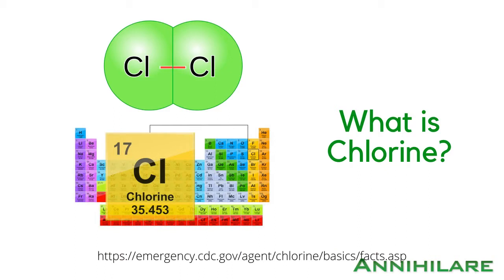Before we start, let's first talk about what chlorine is. According to the CDC, chlorine is a naturally occurring chemical element — one of the basic building blocks of matter. Scattered throughout the rocks of the Earth's continents and concentrated in its salty oceans, chlorine is an essential nutrient for plants and animals. It is represented by the symbol Cl on the periodic table of elements.